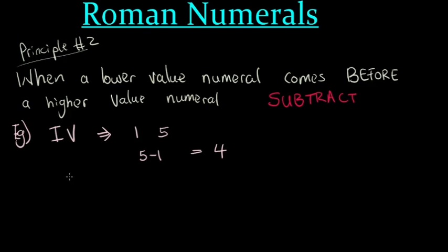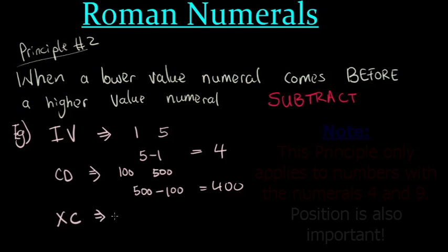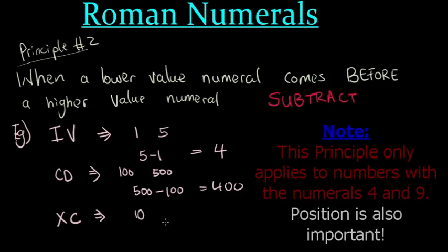Another example, if we had CD, we know that C is 100, and D is 500. We have a lower value before a higher value, so we would subtract. So it would be 500 minus 100 to give us 400. What if we had XC? X is 10, and C is 100, so we would subtract to get 90.